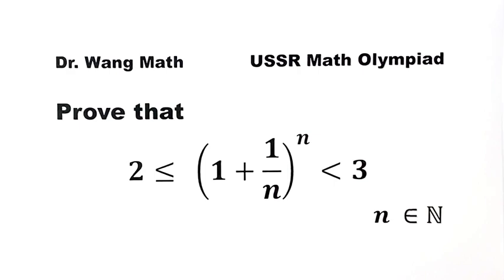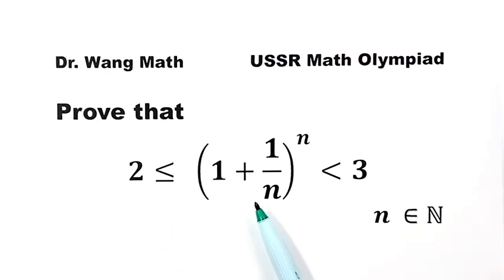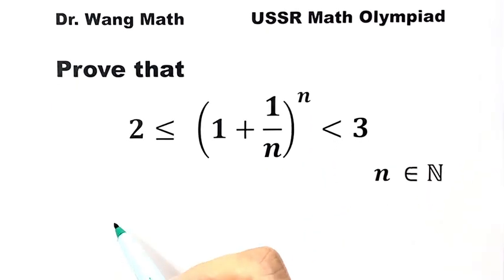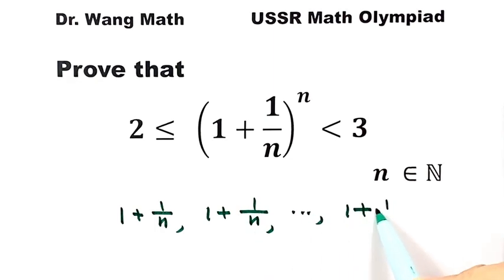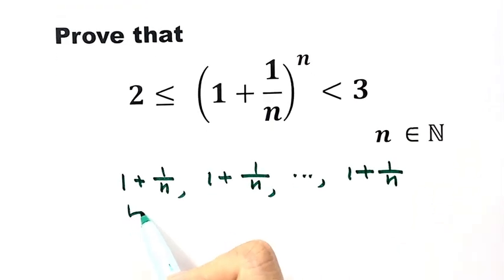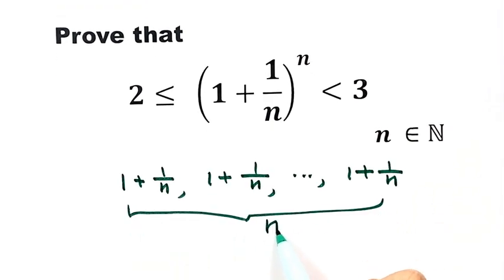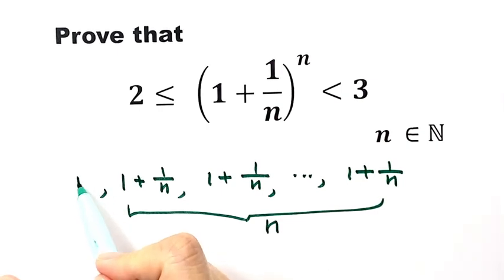We're going to have two main steps. First, we're going to prove the expression is bigger than or equal to 2. Now, (1 + 1/n)^n means we have (1 + 1/n) multiplied n times — so we have n terms of (1 + 1/n). If we add one more term, a 1, then we have n+1 terms.